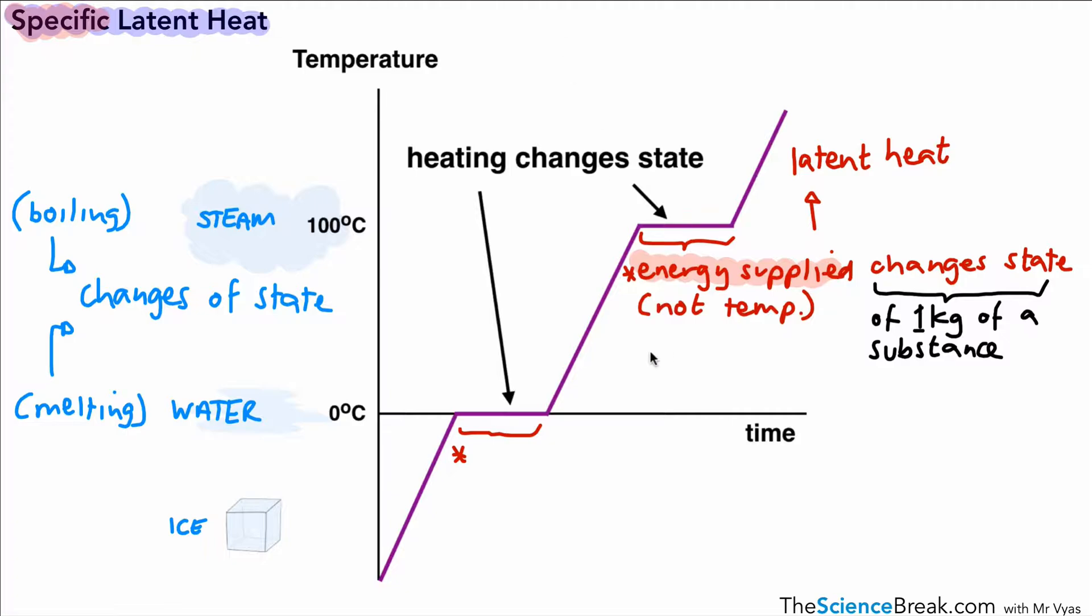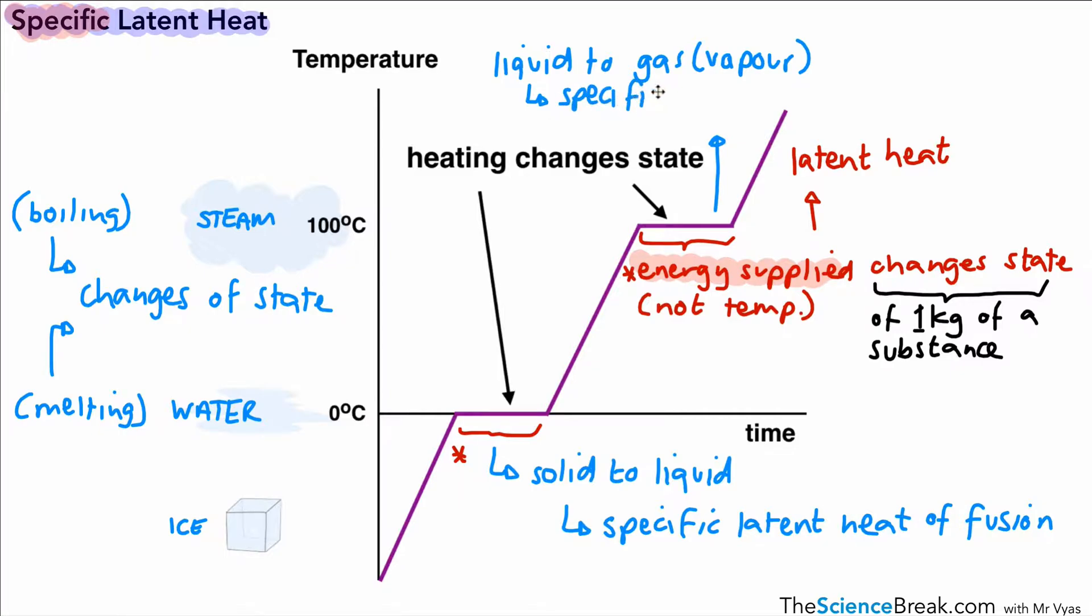However, we do have a kind of sub-definition for this as well. We need to understand the two different points on the graph. Here, when we're changing from solid to liquid, we have a slightly different name. It's still the specific latent heat, but we call it the specific latent heat of fusion. When we go from liquid to gas on the top part of the graph, or liquid to vapor, that has a different name—that's called the specific latent heat of vaporization.